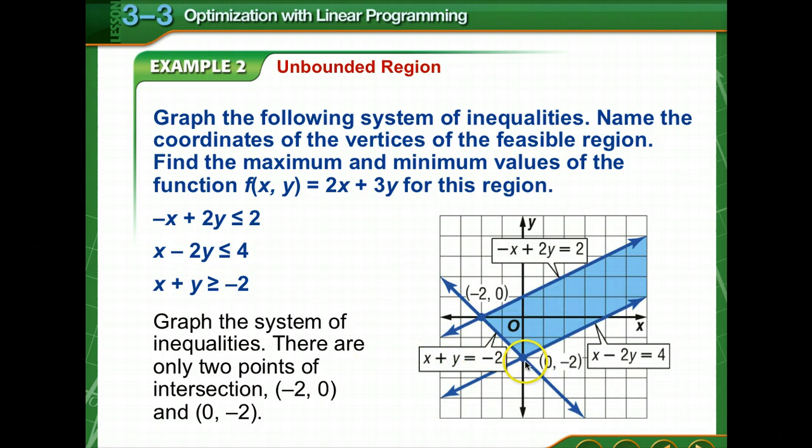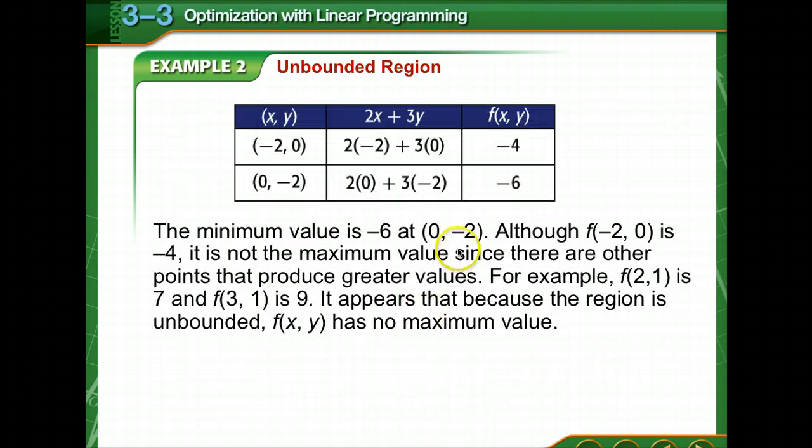So we have a vertex at negative 2, 0, and 0, negative 2. There's only two points of intersection. So when we fill out our table, we only use these two points of intersection. The minimum value is at negative 6 or at 0, negative 2. And although negative 2, 0 is negative 4, it is not the maximum since there are other points that produce greater values.